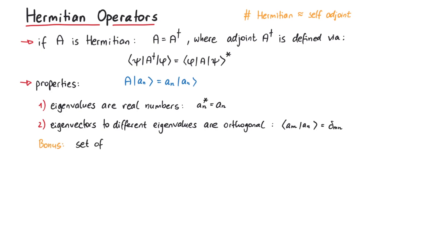Furthermore, the set of all eigenvectors constitutes an orthogonal basis, which can be shown via the spectral theorem. Let's now prove these two statements.